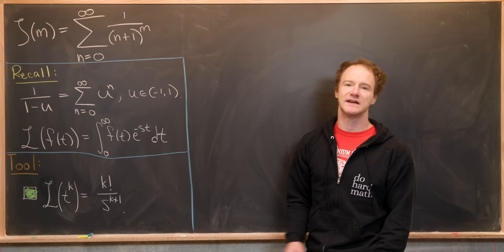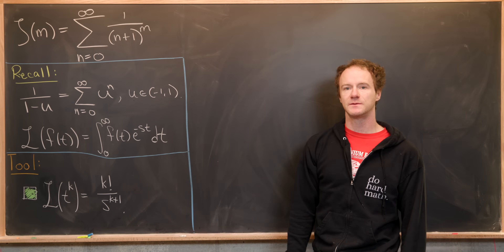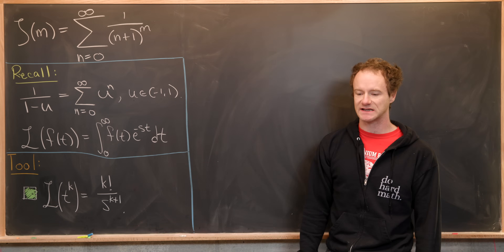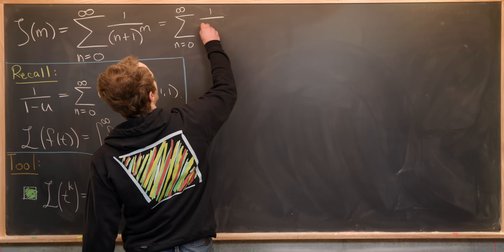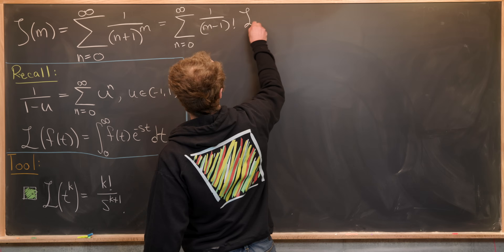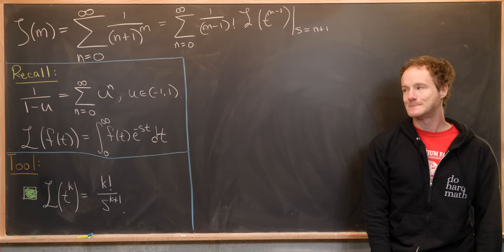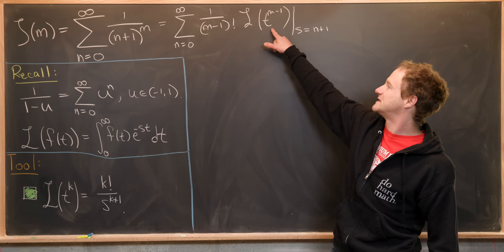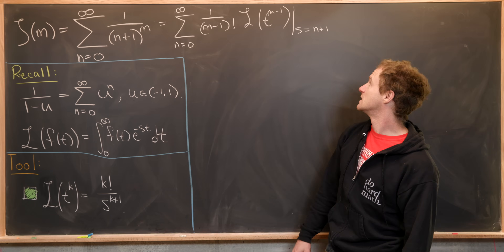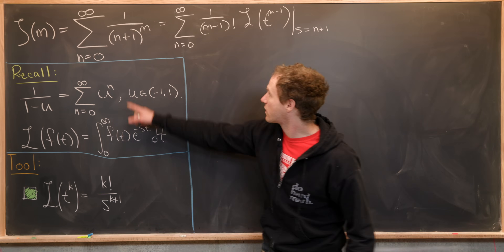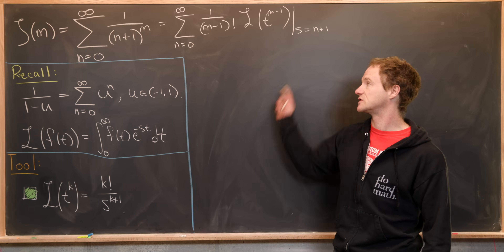Now we're ready to develop an integral identity for the Riemann zeta function. Notice that 1 over (n plus 1) to the m inside the sum looks like a multiple of the Laplace transform of t to the k. We can rewrite zeta(m) as the sum from n equals 0 to infinity of 1 over m minus 1 factorial times the Laplace transform of t to the m minus 1, evaluated at s equals n plus 1. The Laplace transform gives m minus 1 factorial over (n plus 1) to the m, and the factorials cancel, returning us to what we started with.